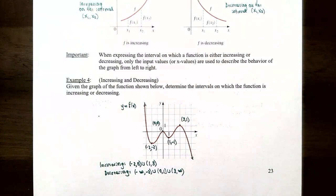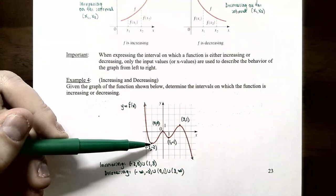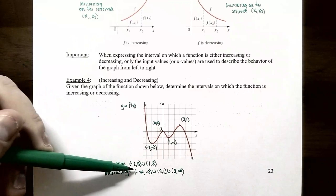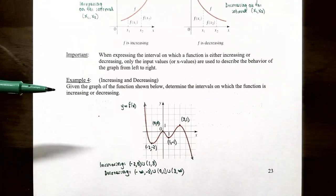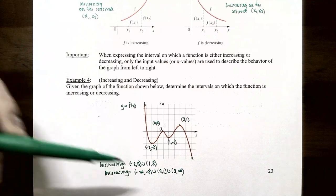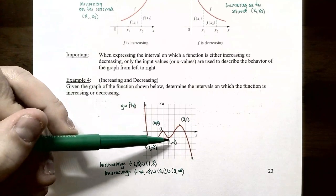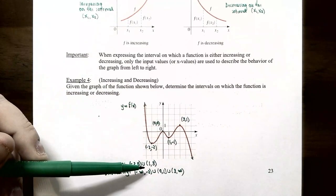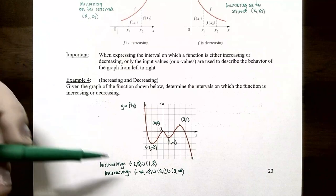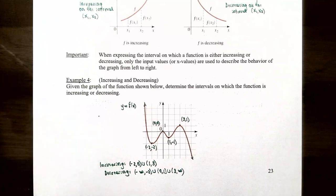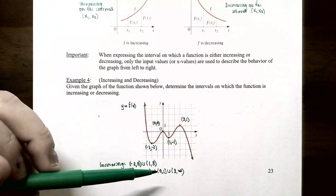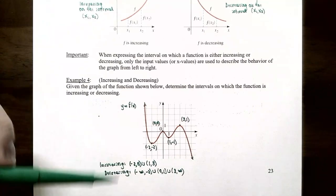The function is increasing from x = −2 to x = 0, and also from x = 1 to x = 3. So the increasing intervals are (−2, 0) ∪ (1, 3), and the decreasing intervals are (−∞, −2) ∪ (0, 1) ∪ (3, ∞). All of these use open parentheses.